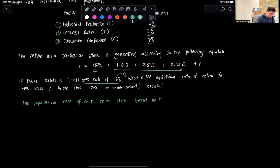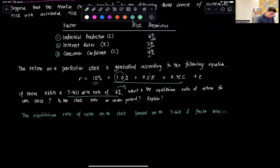The equilibrium rate of return on the stock based on the T-bill and factor betas, so we have three factor betas: this one, this 0.5, and this 0.75. Expected rate of return is equal to rf plus beta i times the risk premium rpi plus beta r times the risk premium of r plus beta c times the risk premium of c.